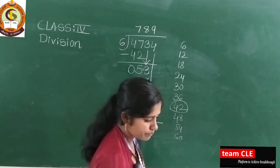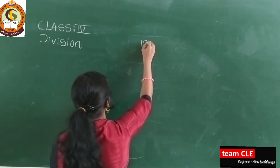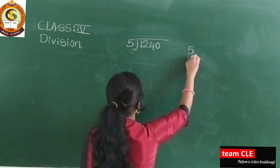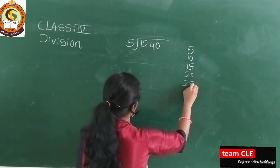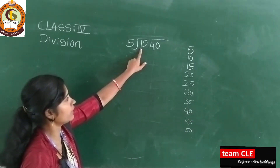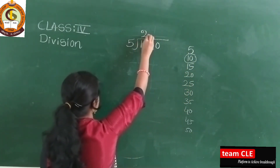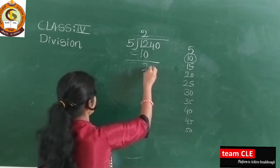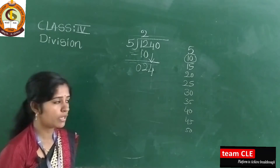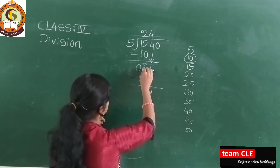Let us take one more example: 1240 divided by 5. Write the 5 times table: 5, 10, 15, 20, 25, 30, 35, 40, 45, 50. I cannot take only 1, so I take 12. Less than 12 is 10, so 5×2=10. Subtract: 2 minus 0 is 2, and 1 minus 1 is 0. Bring down 4 — it becomes 24. 5×4=20. Subtract: 4 minus 0 is 4, and 2 minus 2 is 0.